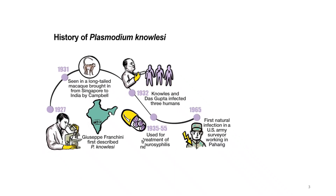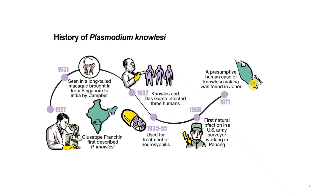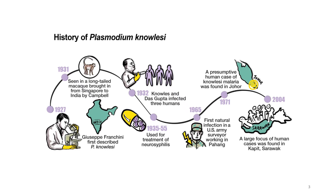The first case of natural infection in a human was only reported 34 years later, when a US Army surveyor acquired the infection while working in the forest in the state of Pahang, Peninsular Malaysia. This single case was followed by a presumptive human case of knowlesi malaria acquired in Johor in 1971. The general held view that zoonotic malaria was an extremely rare event changed following the discovery of a large focus of human infection with P. knowlesi in the Kapit Division of Sarawak in 2004.